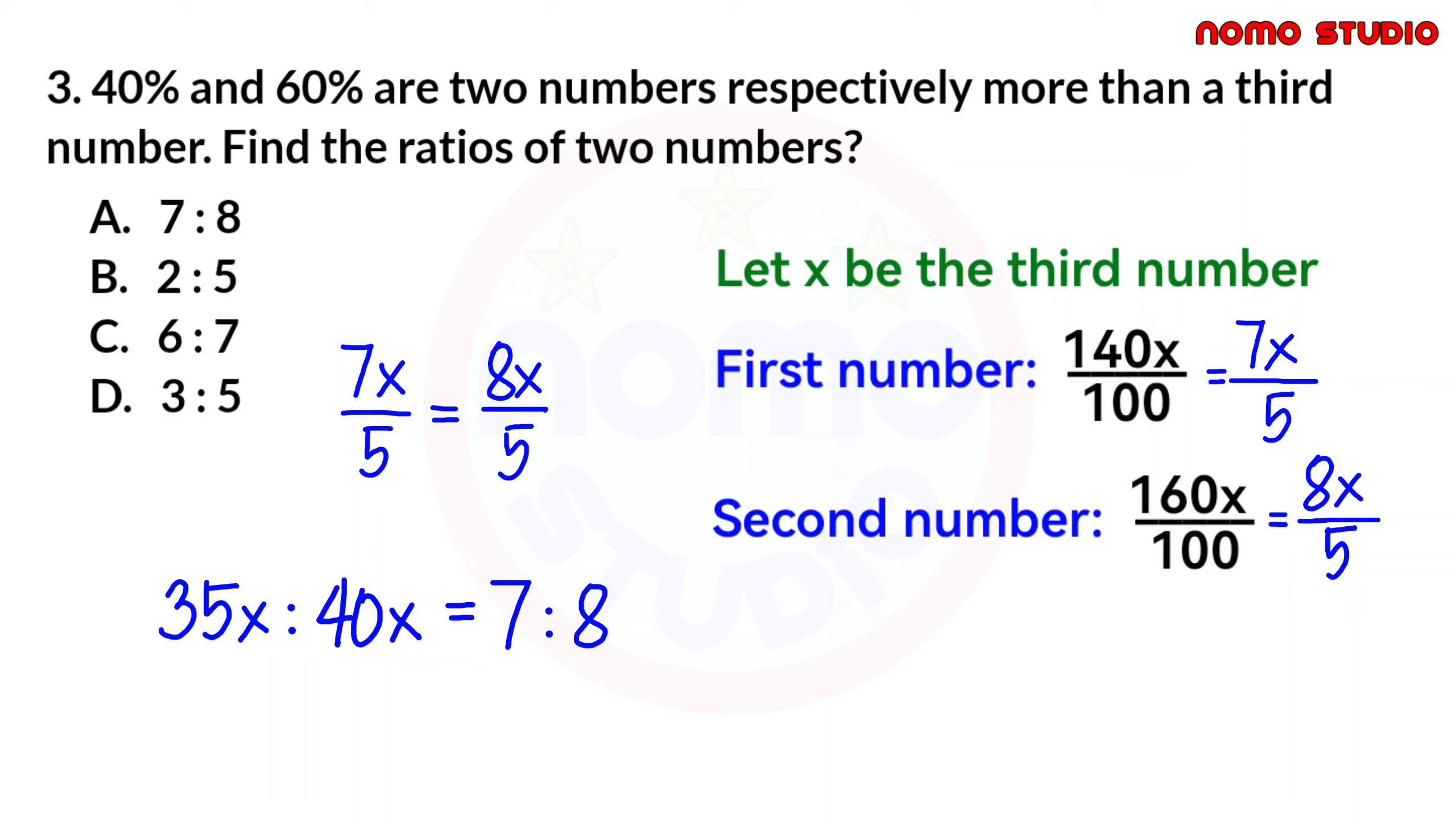Now, in ratio and proportion, we have what we call means and extremes. This is the means, the inner or inside terms. And this is the extremes or outer terms. Then, when we multiply the means and extremes, they must be equal. And when they are equal, then the ratio and proportion is correct. In other words, the answer is correct. Let's try. 40 times 7 equals 280. 35 times 8 also equals 280. Therefore, this ratio and proportion is correct. So, the answer is letter A.